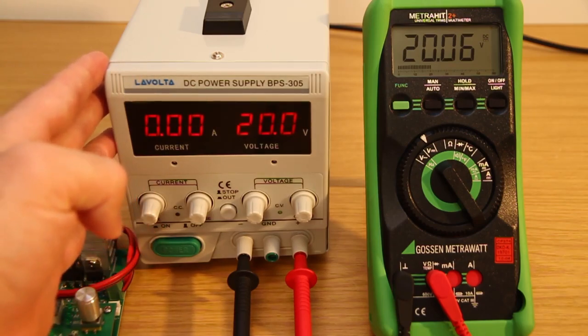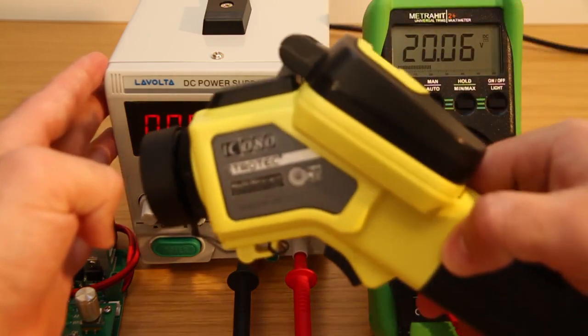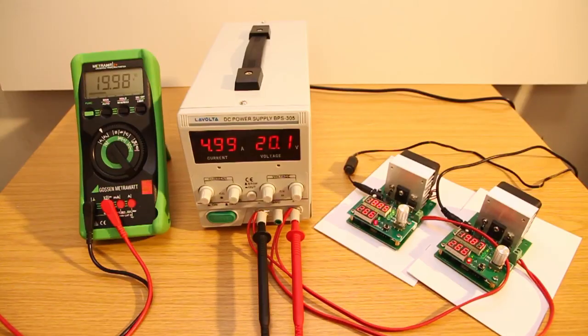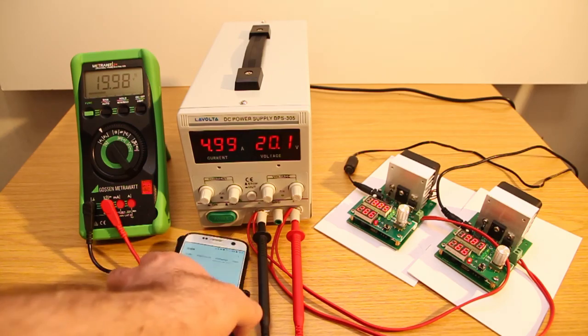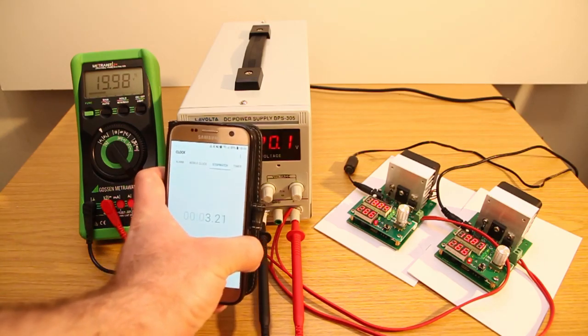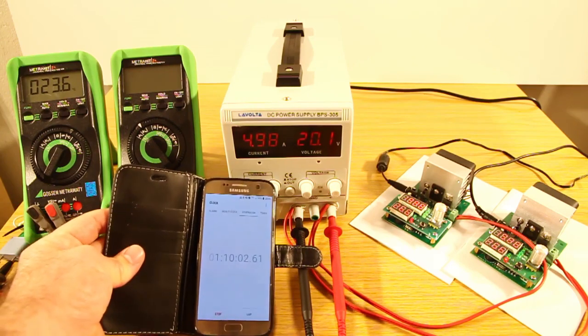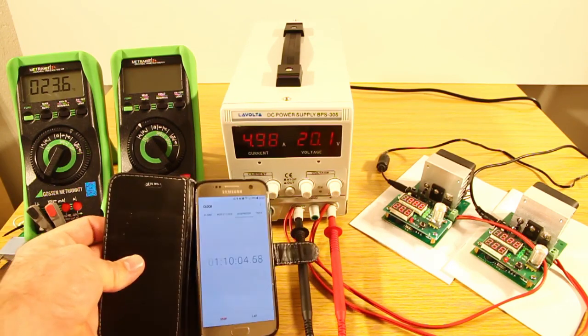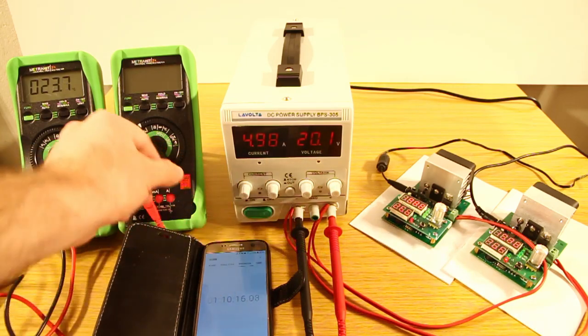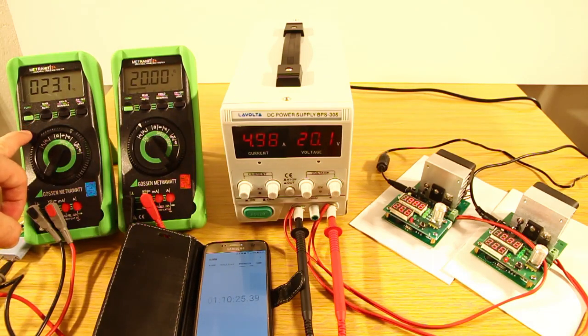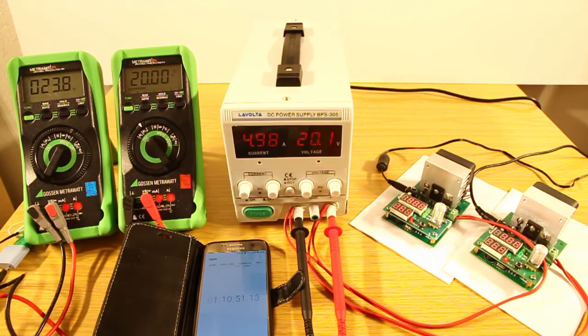As you can see everything is set up, start the timer and come back after an hour and see what's going on. As you can see it now has been over an hour - an hour and 10 minutes - and the power supply has been running at 20 volts and roughly 5 amps. The ambient room temperature is 23.5 degrees. Now let's use the thermal imaging camera to check the temperatures of the power transistors and the rectifier.